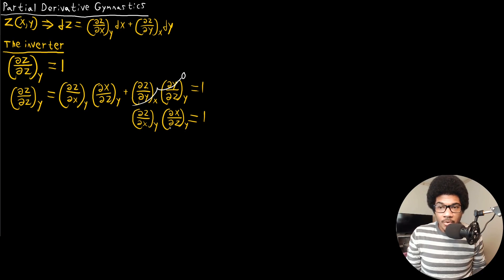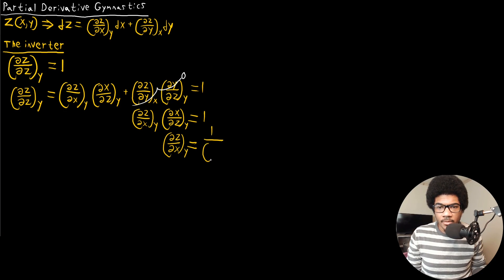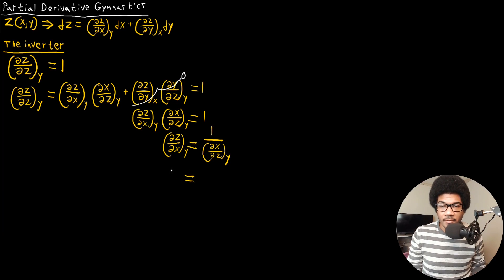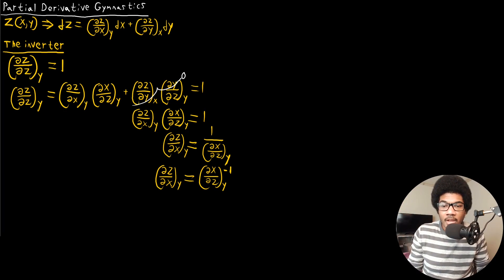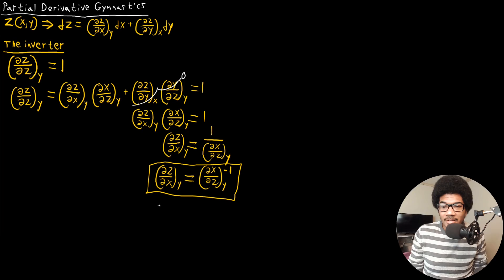Solving for (∂z/∂x) at constant y, we get that it equals one over (∂x/∂z) at constant y, or equivalently, (∂x/∂z) at constant y raised to the negative one. This is the property known as the inverter. It says that for any partial derivative, you can freely flip the variables as long as you take the inverse. This can be useful when you know how z changes with respect to x, but how x changes with respect to z is less clear.